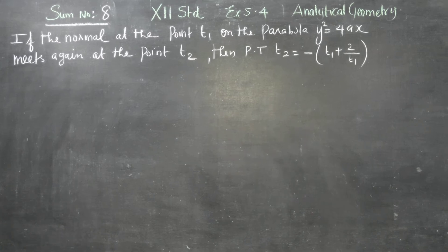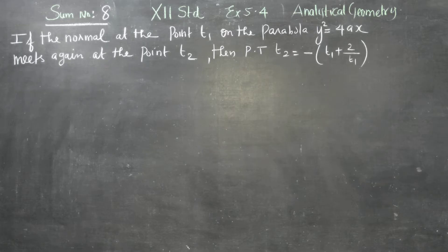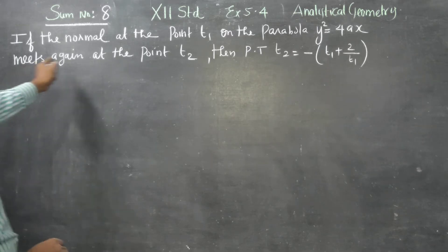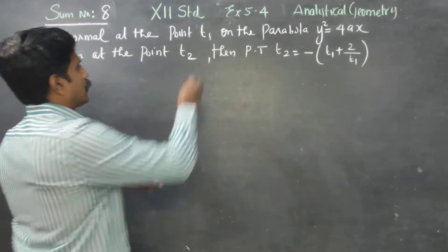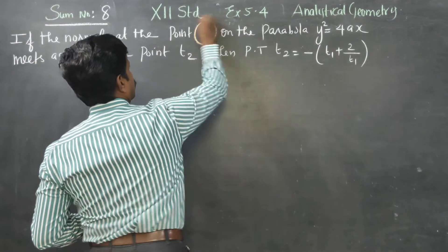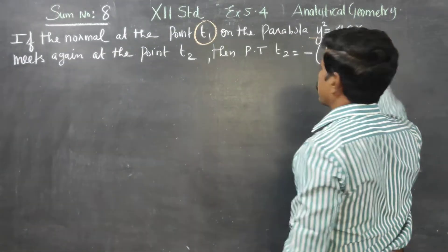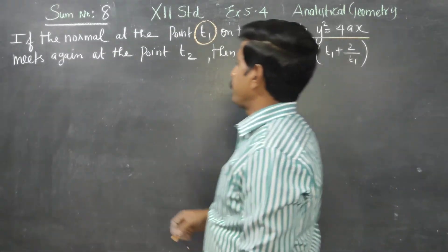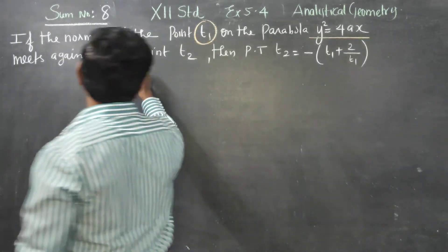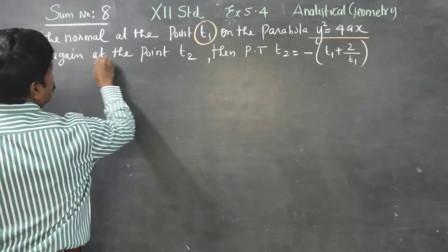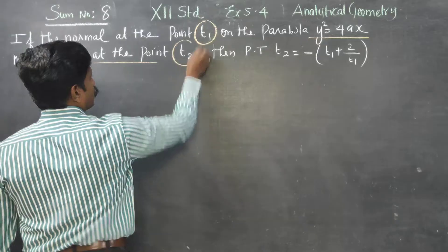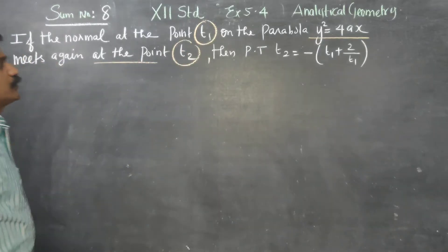Dear 12th standard students, this is exercise 5.4, sum number 8. If the normal at a point T1 on the parabola Y² = 4ax meets again at the point T2, prove it.